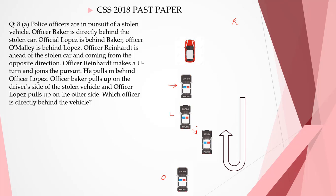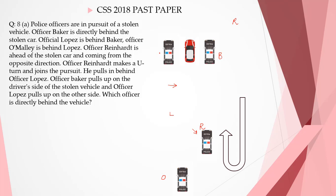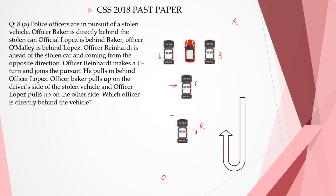Officer Baker pulls up on the driver's side of the stolen vehicle and Officer Lopez pulls up on the other side. Which officer is directly behind the vehicle? Officer Reinhardt is directly behind the stolen vehicle because he was behind Lopez.